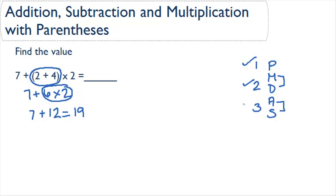This was our addition and subtraction step. Since we only had addition here, we just simply did our addition. 7 plus 12 was 19, so the answer to our problem is 19.